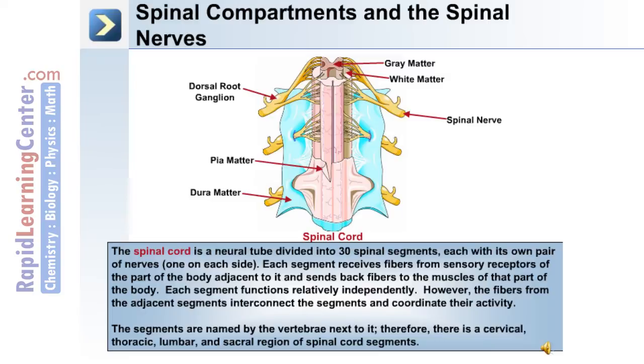The segments are named by the vertebrae next to them; therefore, there is a cervical, thoracic, lumbar, and sacral region of the spinal cord segments.